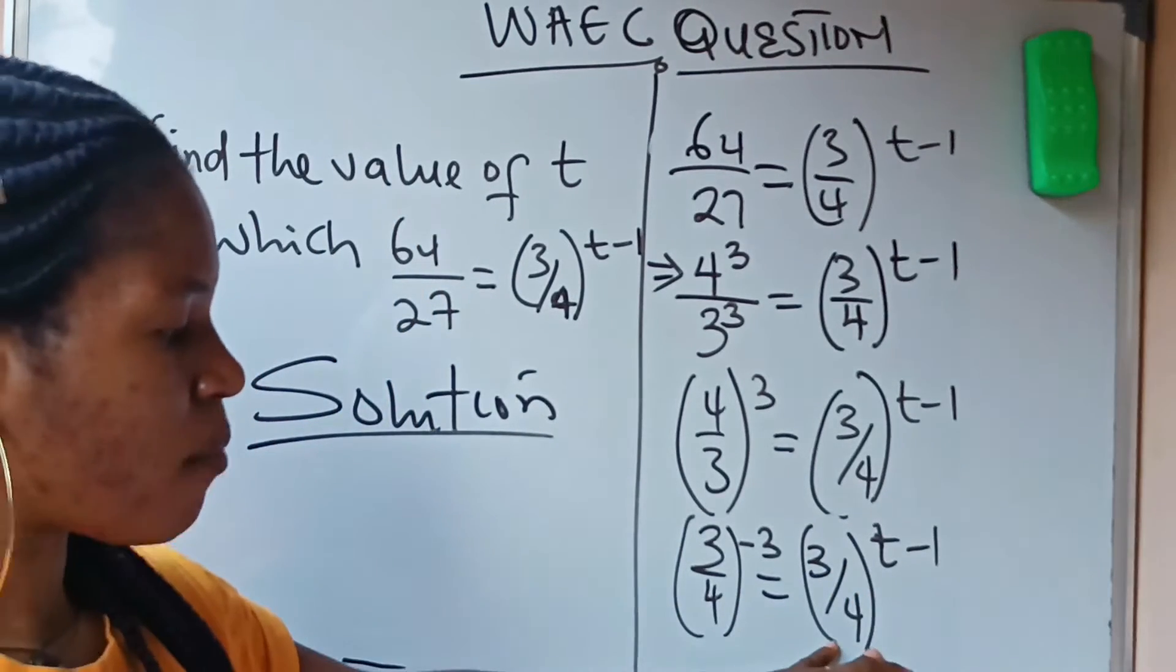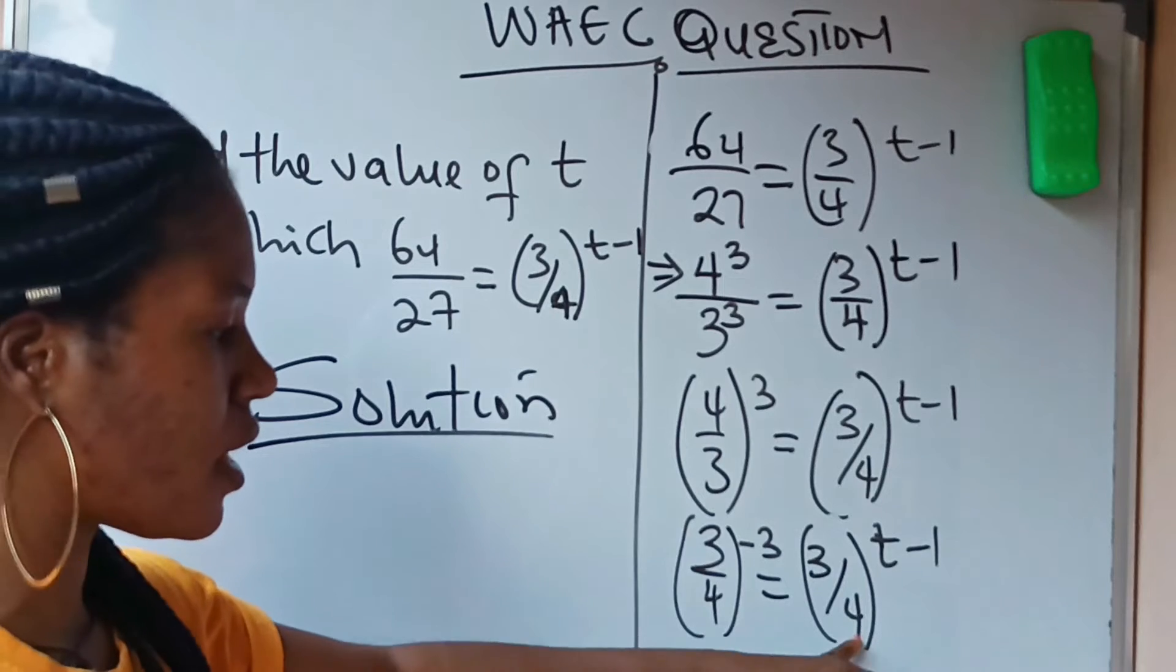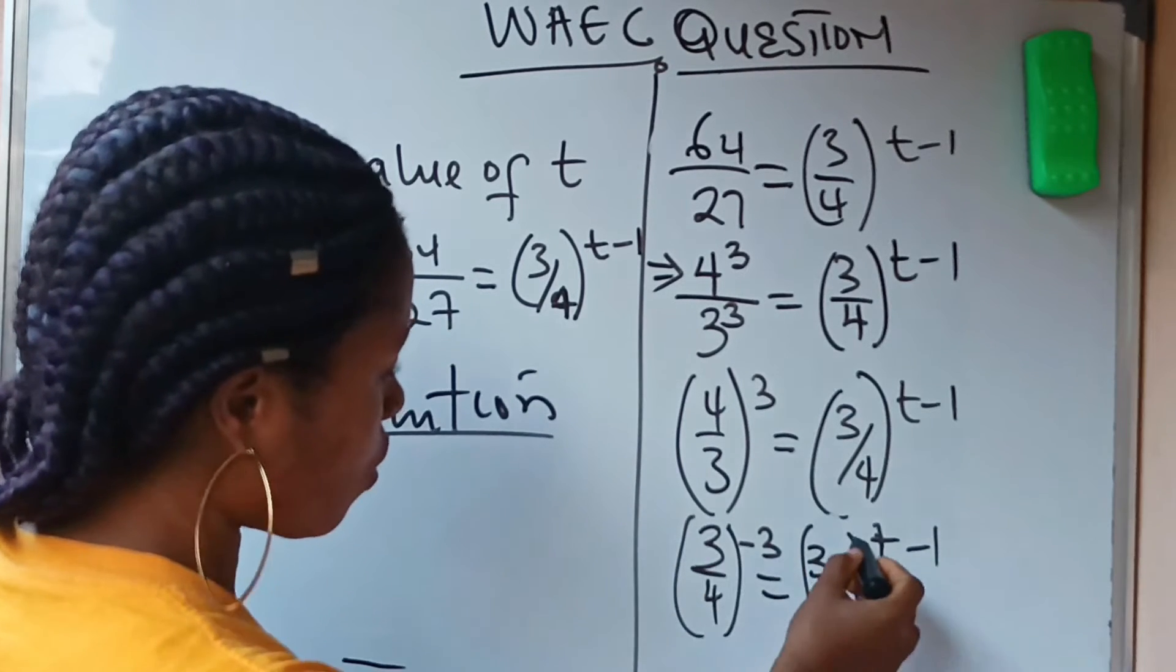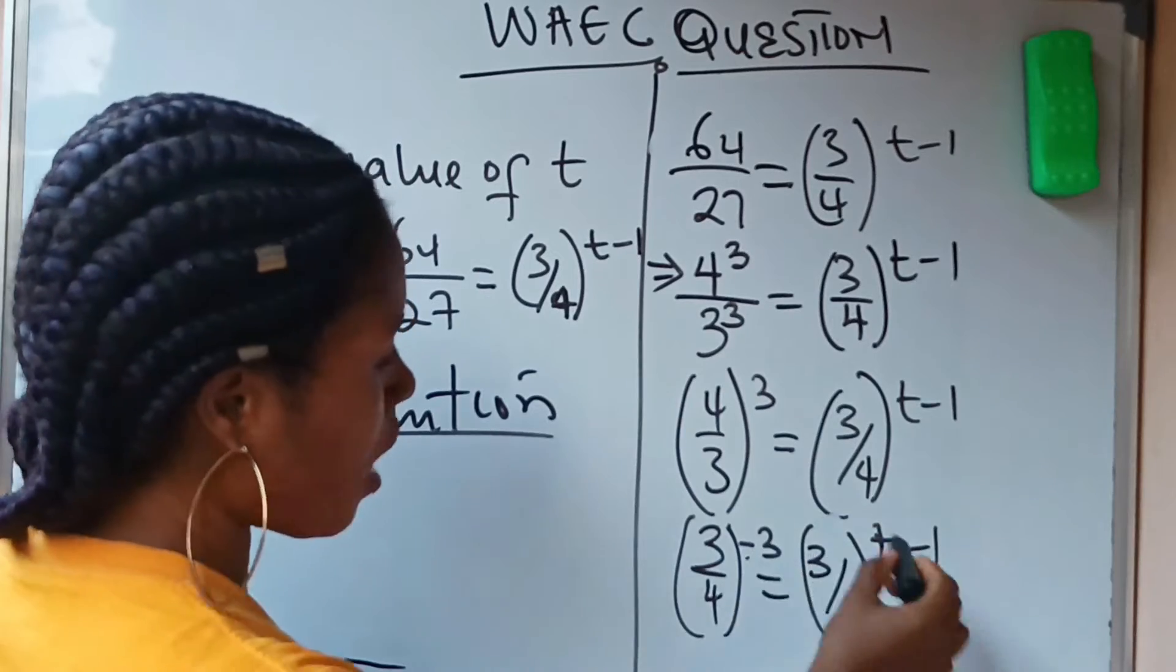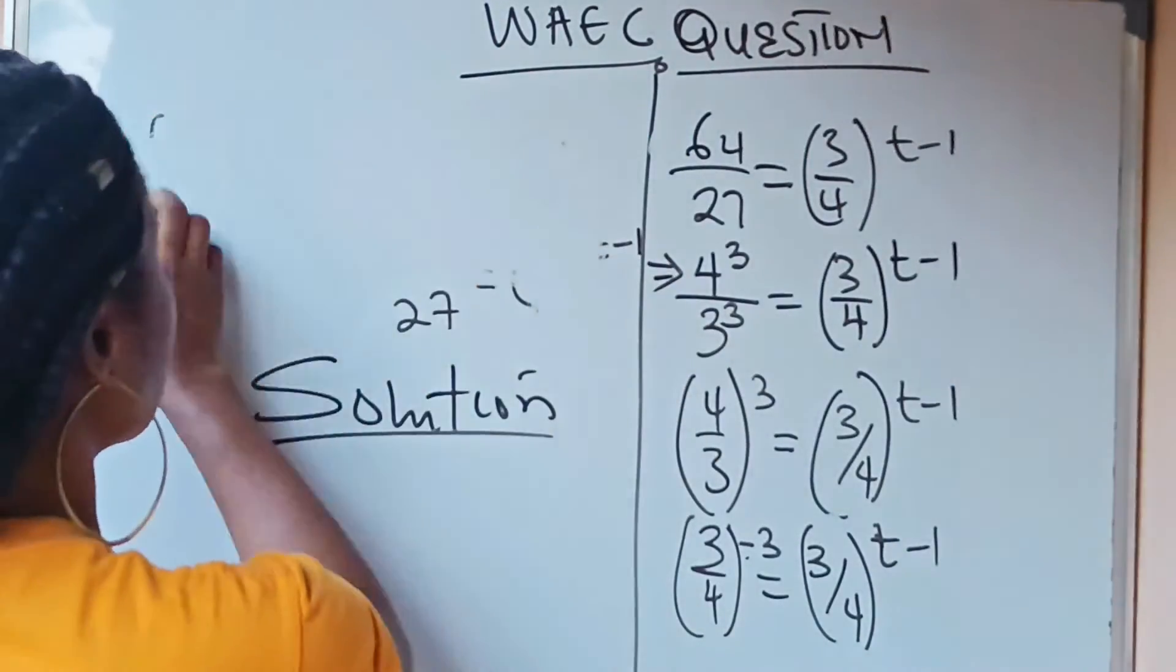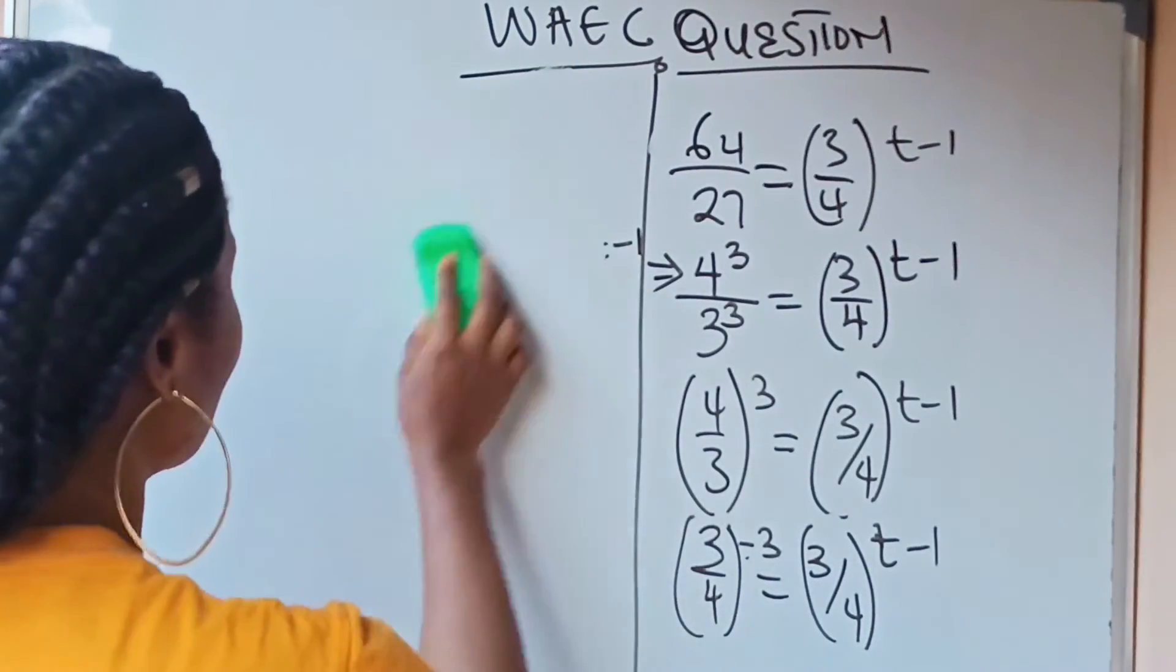You can see that I have actually been able to establish the same thing here and here. So we can say that if this is equal to this, then their powers are also equal. Let's go ahead and get the solution.